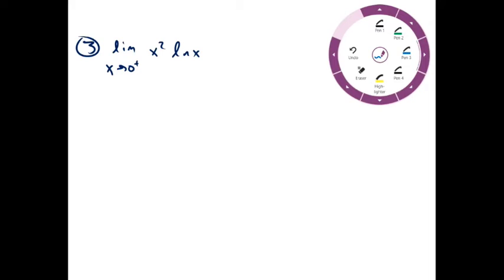So what we can do is take the x squared we have there and turn it into 1 over 1 over x squared. So now if we plug in 0, we get negative infinity on top and infinity on the bottom, which is an indeterminate form.